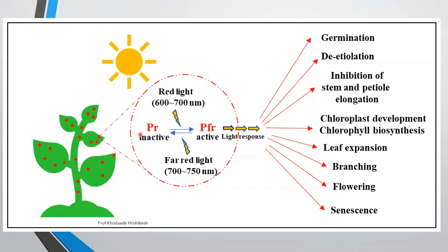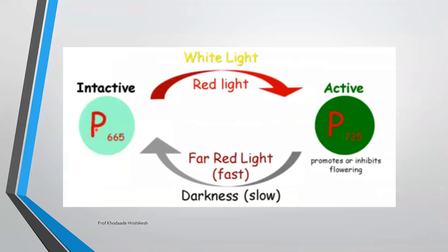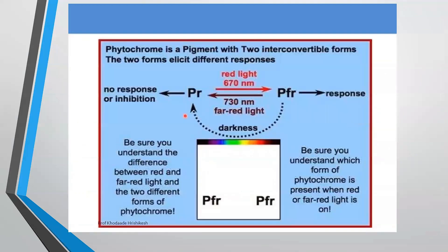Here in the photograph, you can notice that the inactive form of phytochrome is converted into active form, after which responses occur. P660 or P665 is the PR form of phytochrome, and P725 is the PFR form. This activity happens in daytime; the reverse happens in nighttime. Be sure that you make the difference between red and far red light and the two alternative forms of phytochrome.